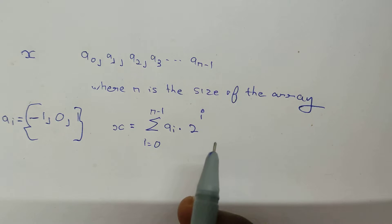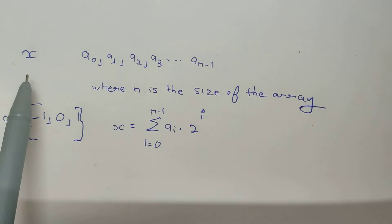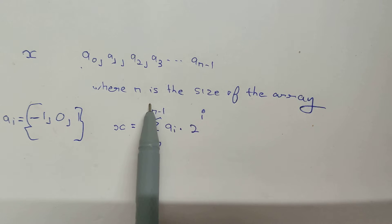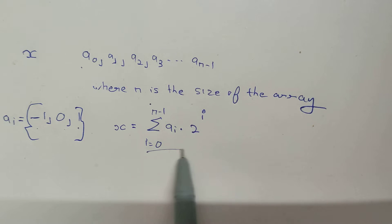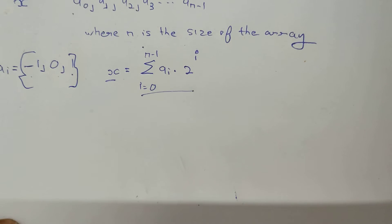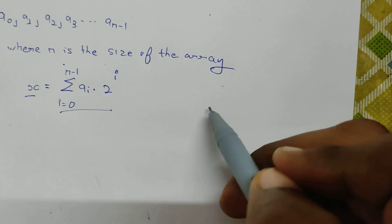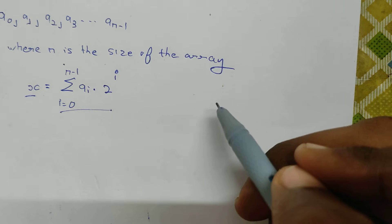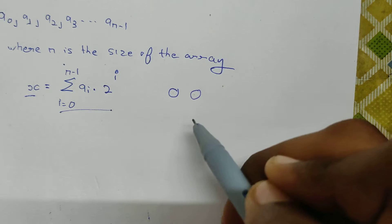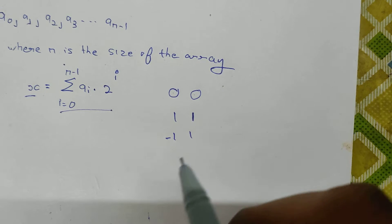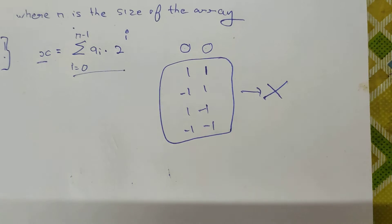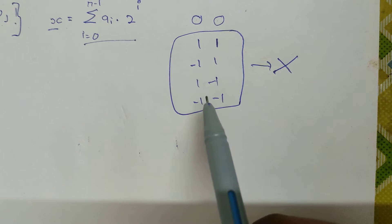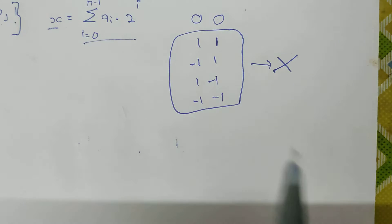So they give us a value x, we find an array where each element is -1, 0, or 1, and the sum under this equation equals x. There is another constraint: no two non-zero values can be adjacent. So values like 1,1 or -1,-1 or -1,1 are not allowed. Two zeros can be adjacent to each other, but two non-zero values cannot.